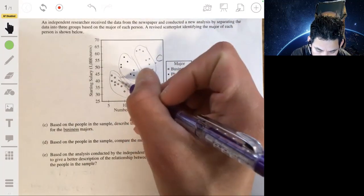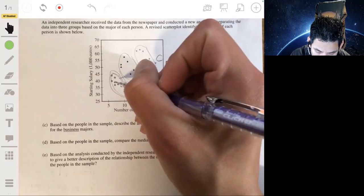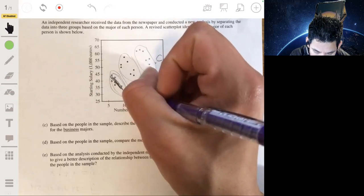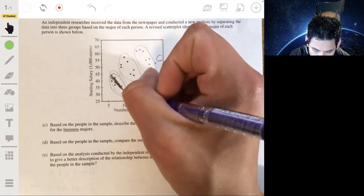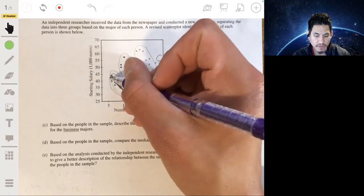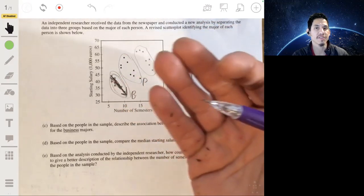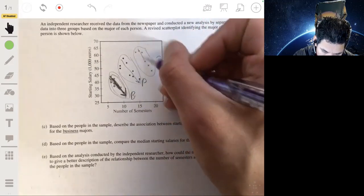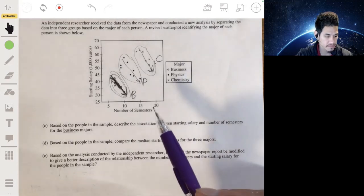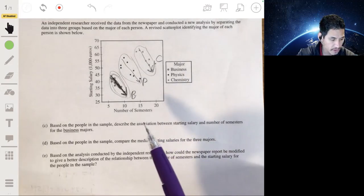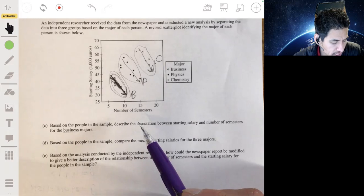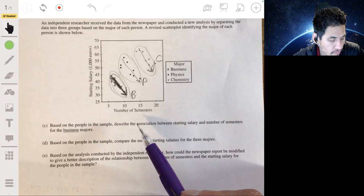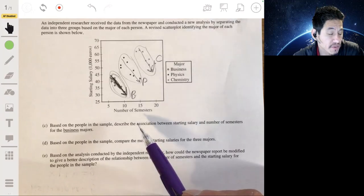So this is what's interesting. Within just this group, as the number of semesters increases, the starting salary decreases because you can essentially see this trend line that has a negative slope. And in fact, all of them kind of do that. So it's something to definitely consider.